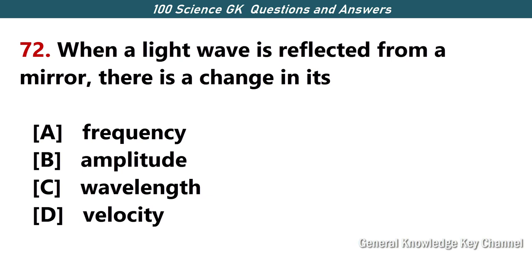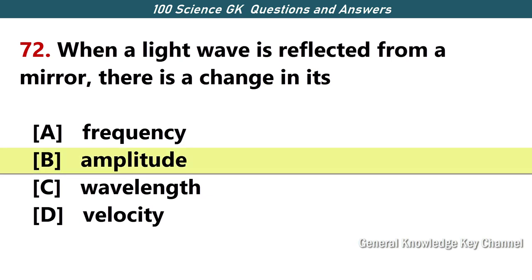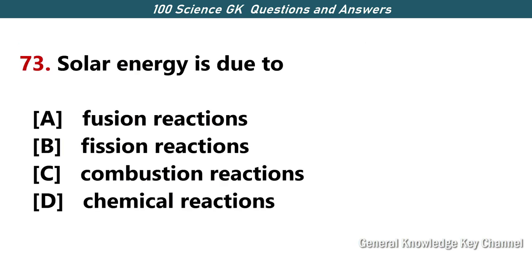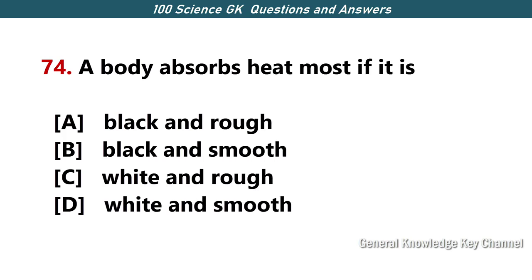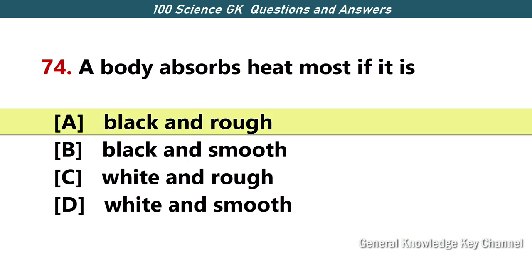When a light wave is reflected from a mirror, there is a change in its — Answer B — amplitude. Solar energy is due to — Answer A — fusion reactions. A body absorbs heat if it is — Answer A — black and rough.